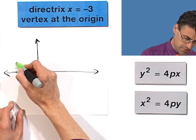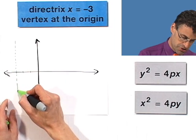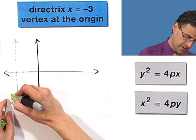So negative 1, negative 2, negative 3. This is x equals negative 3.